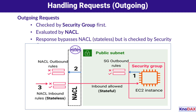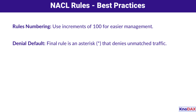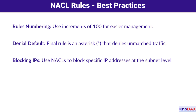Now let's talk about some best practices for NACL rules. First, use increments of 100 when numbering rules — this gives you room to add rules later without disrupting the order. For example, rule number 100 allows traffic while rule 200 denies it, and the lower-numbered rule always takes precedence. Remember that the default rule, represented by an asterisk, denies all traffic that doesn't match an earlier rule. Finally, don't use NACLs to create overly complex rules; they should be coarse-grained. For fine-grained control, stick with security groups.